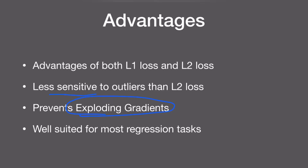When does exploding happen? This happens when your loss values are very high. If loss values are very high, we take only absolute differences — not the squared terms. So with smooth L1 loss, the loss value is smaller even in the case of outliers, which prevents exploding gradients. As it is a combination of both, it is actually used for most regression tasks because it has the advantages of both loss functions.